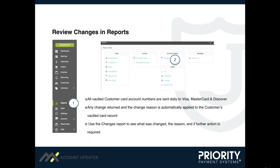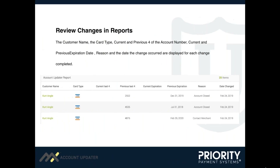So where can you see the changes? Click on the Reports tab found in the left-hand navigation, and a new report labeled Changes is located on the Account Updater tile. Click here to review changes made by the Account Updater app. The Changes report provides a look into the previous data and current data, along with reason and date changed.